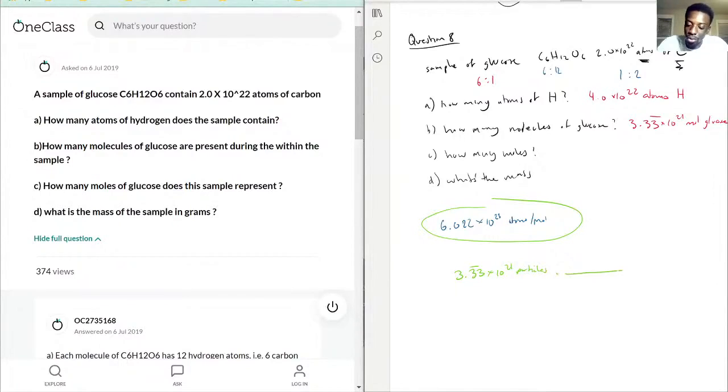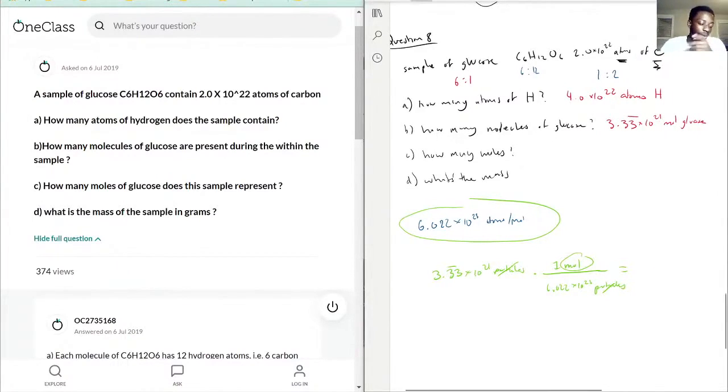We know for every one mole there's 6.022×10^23 particles. When you put it like that, you see that your units cancel out, leaving you with the moles. That's perfect. And the number we get here, I did the calculation beforehand, was 5.5×10^-3 moles. That is how many moles we have of glucose.